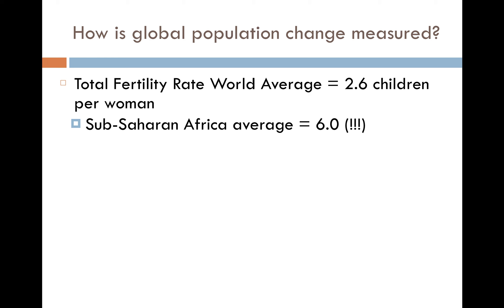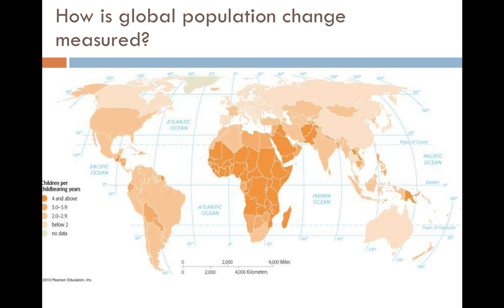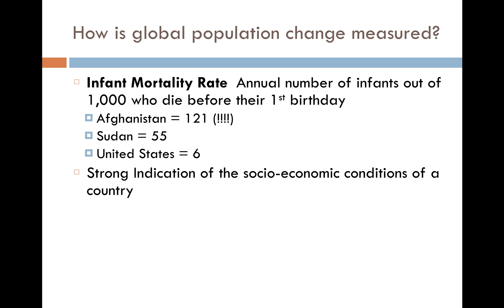The total fertility rate average in Sub-Saharan Africa is 6.0 — an enormous difference from the global average. This is another statistic that supports what we discussed earlier with natural increase rate. The map of total fertility rate around the world is very similar to the map we looked at earlier with natural increase rate — you can go back to compare them if you see fit.